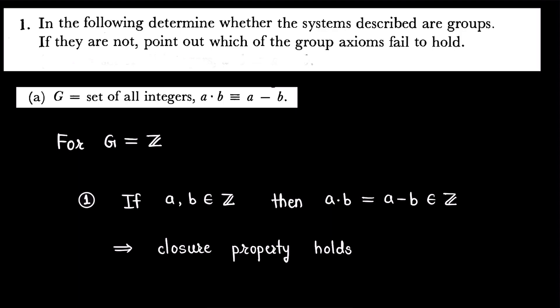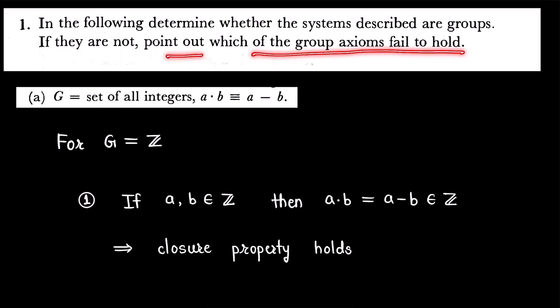Hello. In this video I am going to solve one exercise question from chapter number 2 from the book Topics in Algebra. The question is: in the following, determine whether the systems described are groups. If they are not, point out which of the group axioms fail to hold. To solve this question, first of all we have to recall the definition of a group.